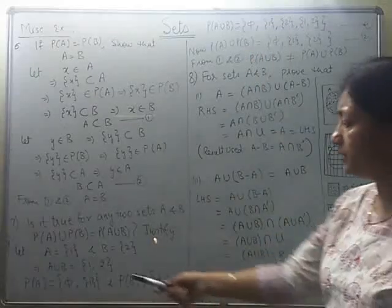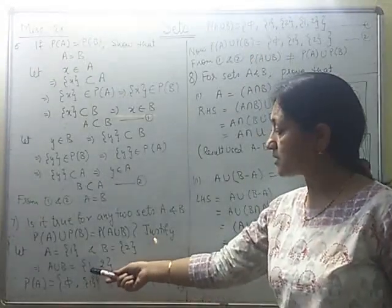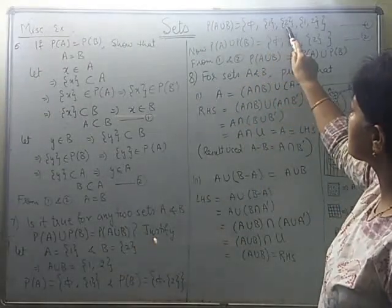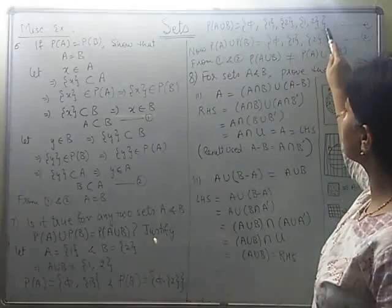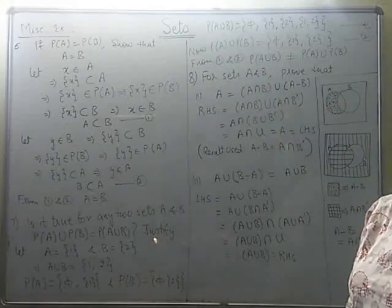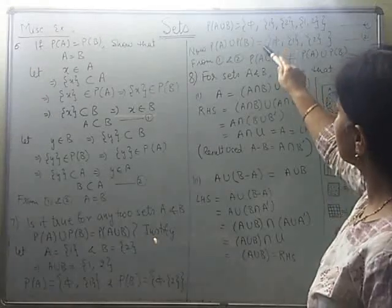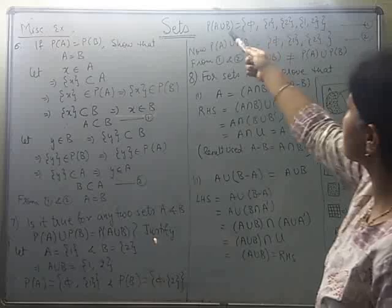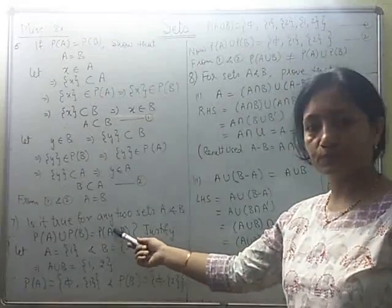Now moving on to power set of A union B. A union B has two elements, so it will have four subsets: null set, {1}, {2}, and {1,2}. The set containing all these subsets is power set of A union B = {∅, {1}, {2}, {1,2}}. Now check — are these two results equal? You will find they are not equal. The first has only three elements and the second has four elements, so they cannot be equal. This statement is not true.